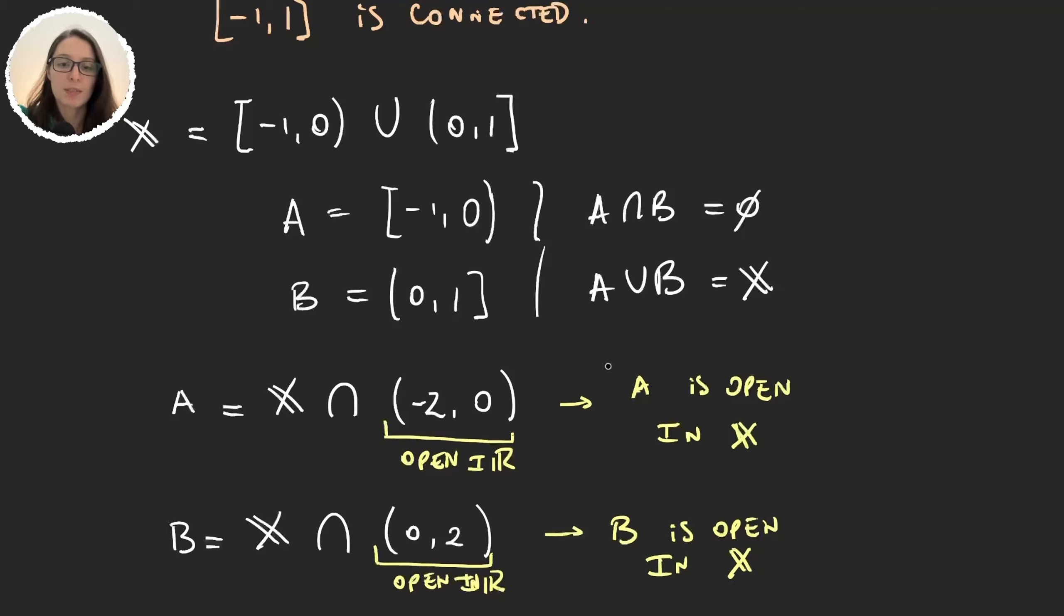So yes, given that A and B are open, and because we have this relation, then we can say that X is not connected. In the next video we will see some of the properties that connected spaces have.